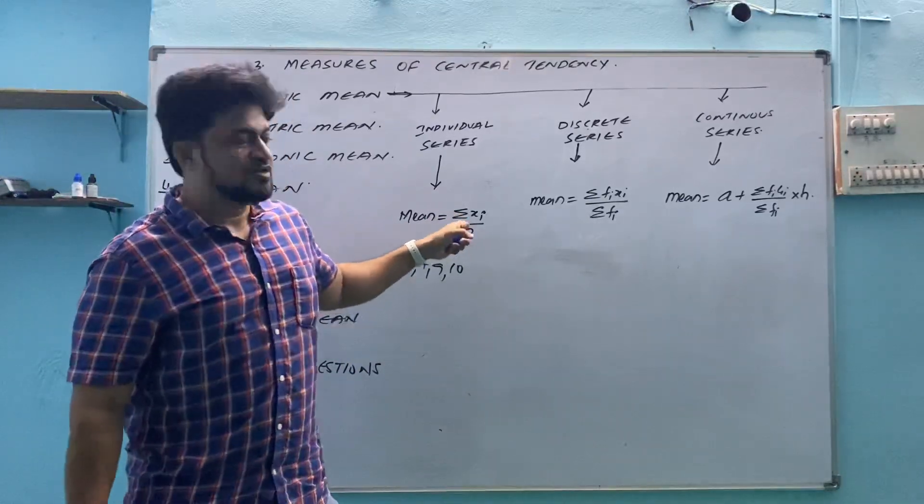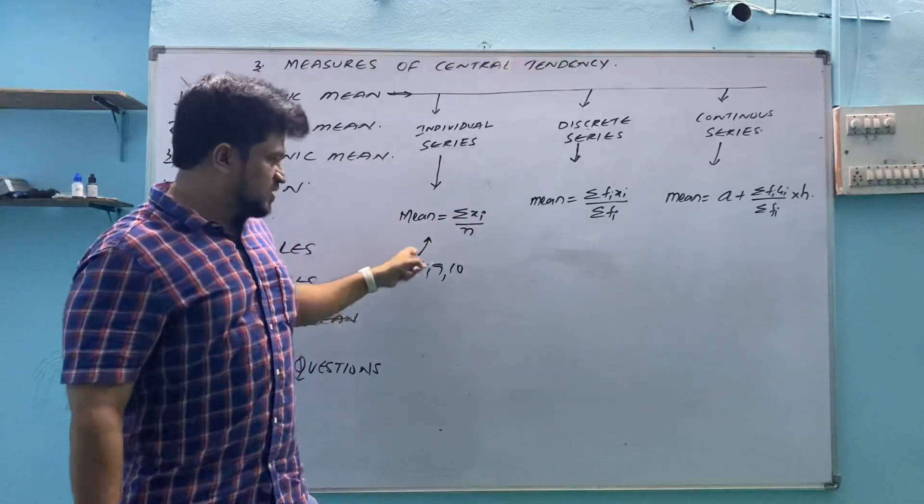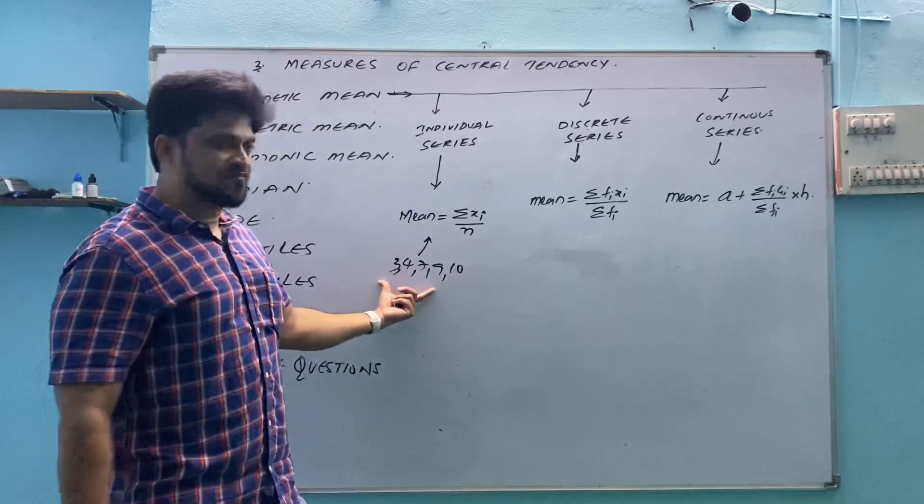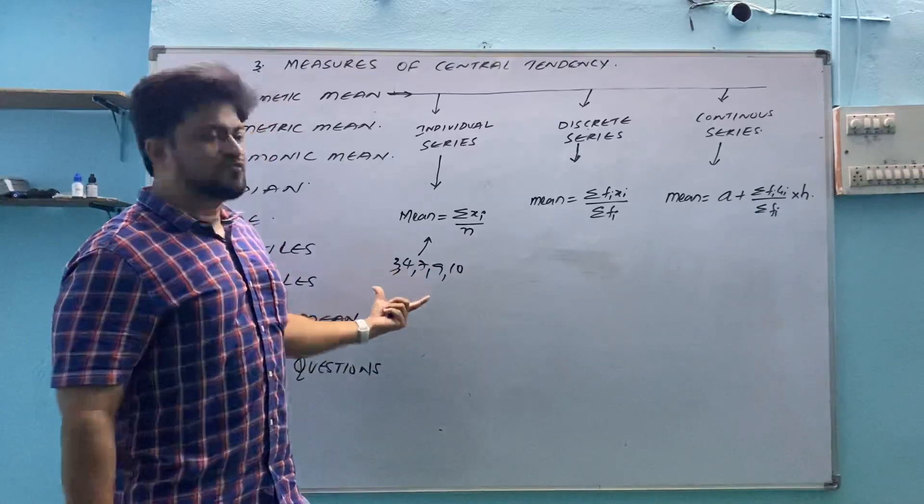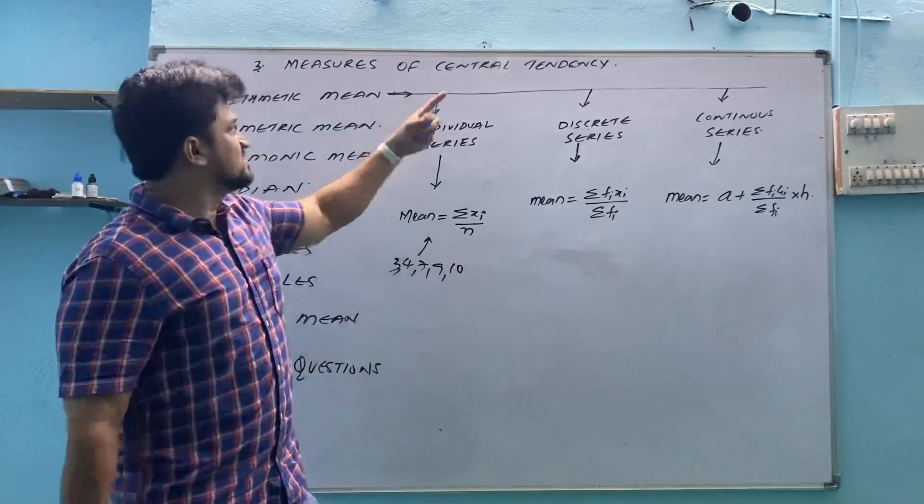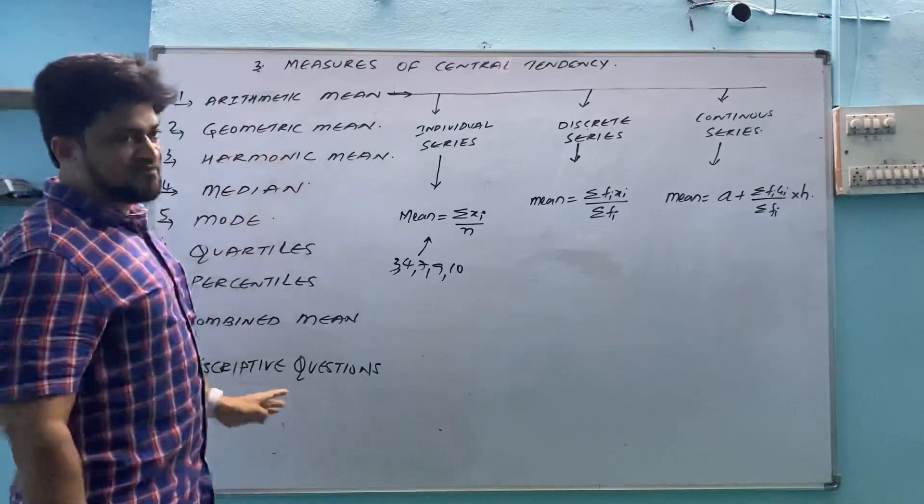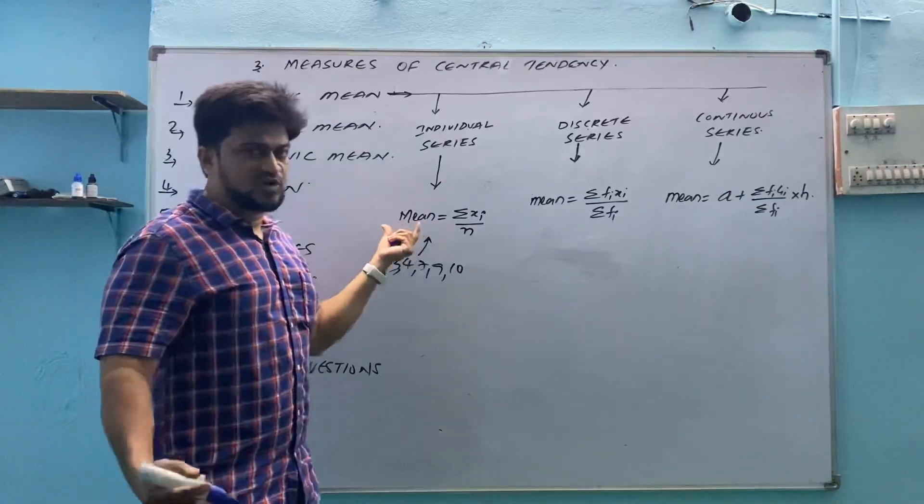This sigma means sum of, sum of all the observations, whatever observations. Suppose 5 students marks are there out of 10, one percent were 3, 4, 7, 9 and 10. If I want to find mean or average, these all are averages itself, mathematical averages. One mathematical average what we are doing is mean.